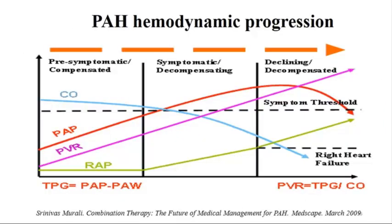This figure highlights the hemodynamics of pulmonary hypertension during the course of disease. Right atrial pressure tends to go up in advanced disease and cardiac output starts to come down. PVR continues to go up during disease progression. Importantly, pulmonary artery pressure increases at the beginning of the disease, but once you start having heart failure, the mean pulmonary artery pressure actually goes down. So you shouldn't rely only on mean pulmonary artery pressure as a diagnostic or prognostic factor—it will be the least prognostic indicator.